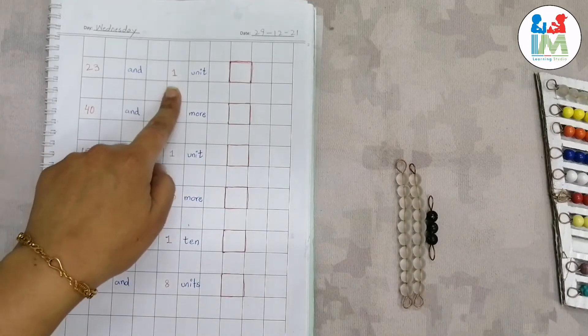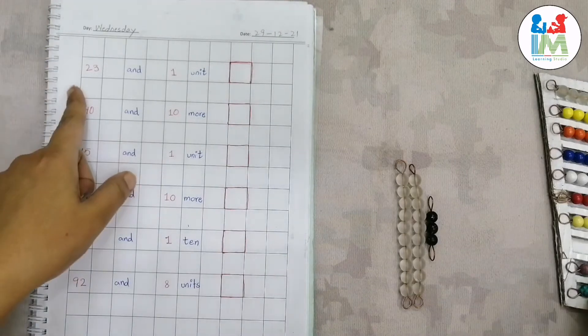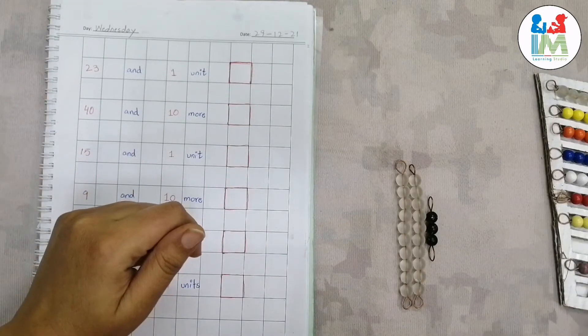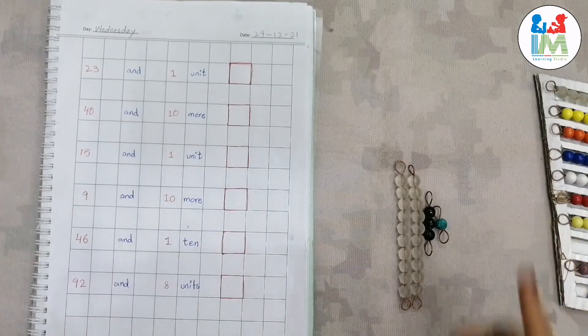Okay, now add one unit. Add one unit to number 23. Okay, now what number is this? 24. 24, right. Write 24.